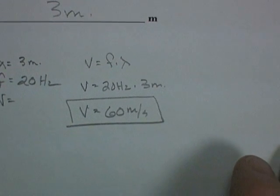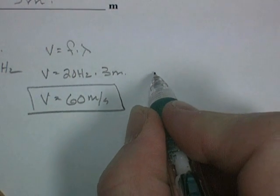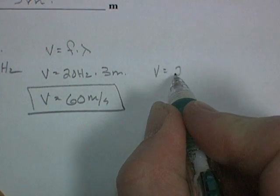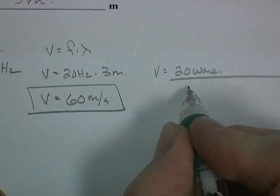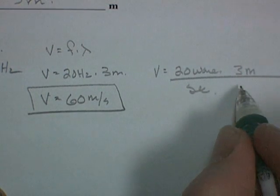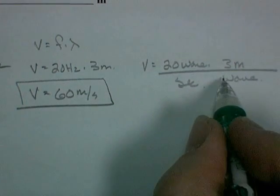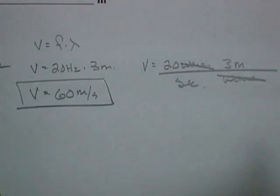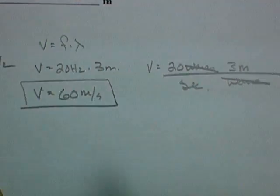Now, for units, as long as we have a few seconds, I'll review that. Velocity is 20 hertz. And hertz is waves per second. Wavelength is 3 meters per wave. So if you're looking at the units, you would see that waves would cancel out. You would be left with meters per second, which is units of velocity. So that's how the units work out. That was fun.